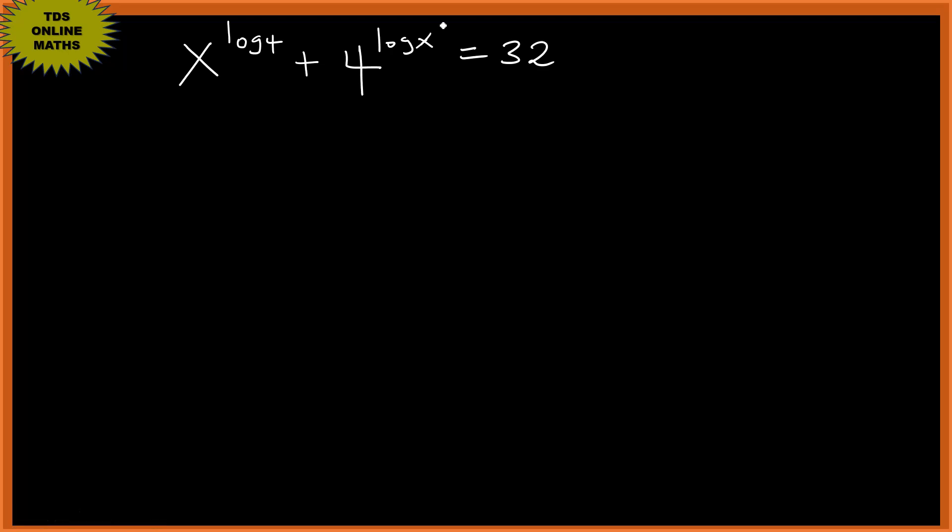Alright, let's solve this equation. We have x raised to log 4 plus 4 raised to log x equals 32. Now, before we start, any time you are given log of something without the base, the base by default is 10. So if you don't see the base, it is 10.